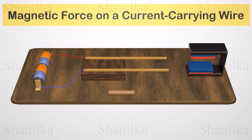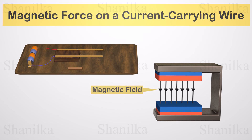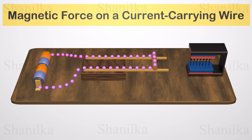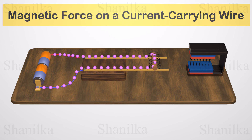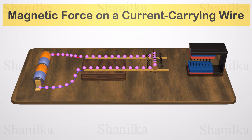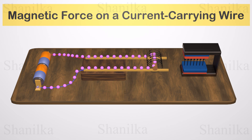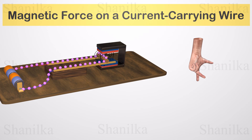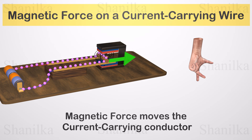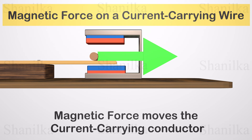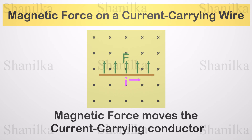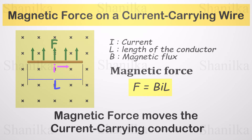Let's talk about a simple experiment we can do in school. We need a nearly uniform magnetic field and a simple setup with a movable conductor. When we place the conductor on the two paths, the circuit is complete and the current starts to flow. A current-carrying conductor has its own magnetic field around it, and when we bring our uniform magnetic field closer to the conductor, the conductor faces a magnetic force — we can find its direction using the left-hand rule. The magnetic force on a current-carrying conductor in a magnetic field can be calculated using the current, length of the conductor, and the magnetic flux density.